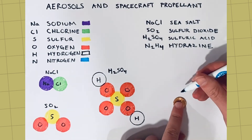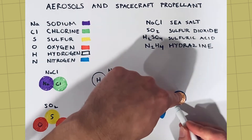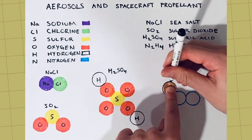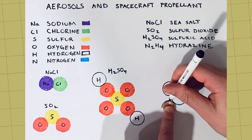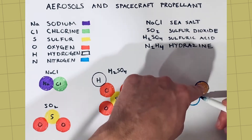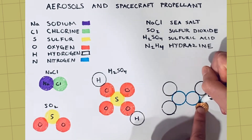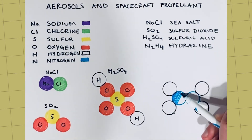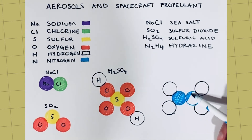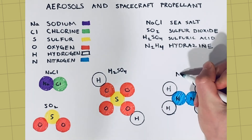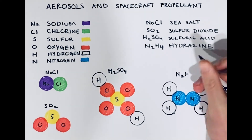You can also make the molecule for the JPSS spacecraft propellant, hydrazine. Hydrazine is a liquid propellant used to get JPSS into the proper orbit, make course corrections, and maneuvers to avoid orbital debris. Hydrazine, N2H4, has two nitrogen atoms and four hydrogen atoms.